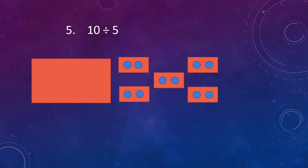There are zero dots left. All the dots have been divided equally. Each box has 2 dots. So, 10 divided by 5 is equal to 2. This means 5 can be subtracted 2 times from 10.